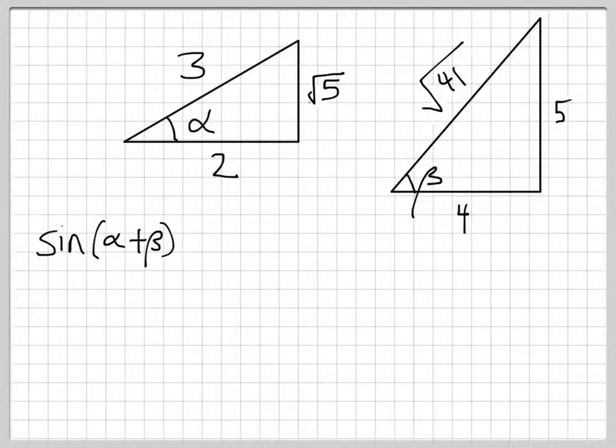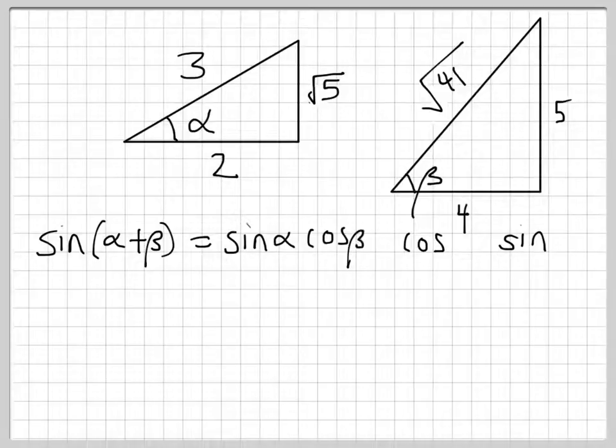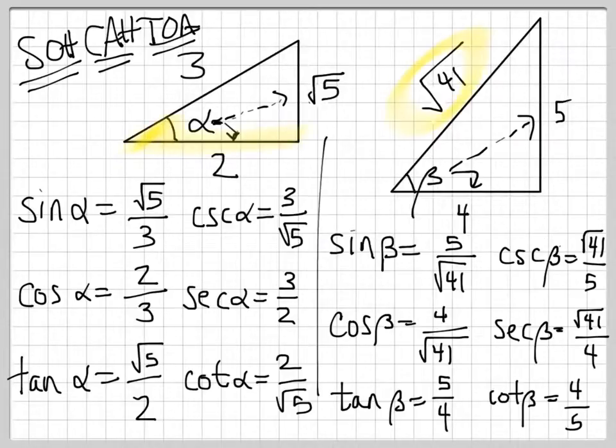But, lucky for us, we have the formula for sine of alpha plus beta. Remember, sine cosine, cosine sine. And so, if we could figure out a way to compute sine of alpha, cosine of beta, cosine of alpha, and sine of beta, we would have it made. And if we go back exactly one page, we have exactly this information.